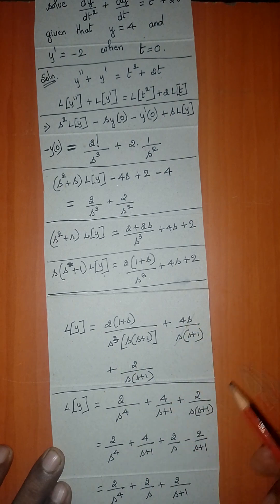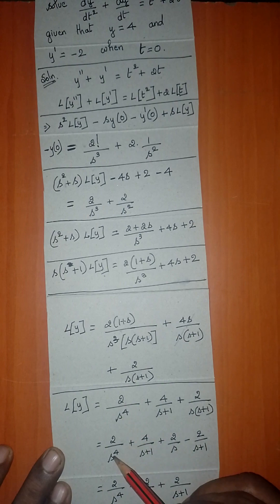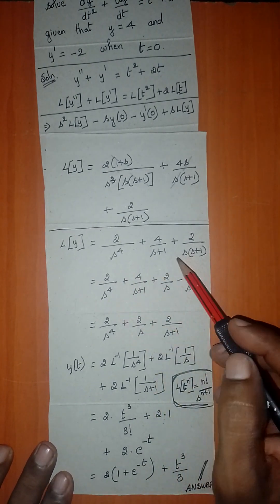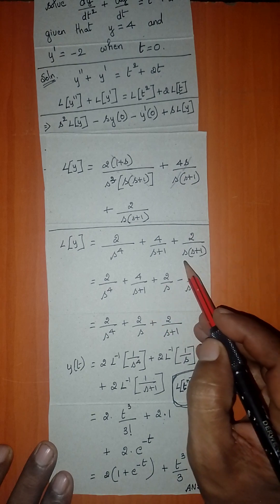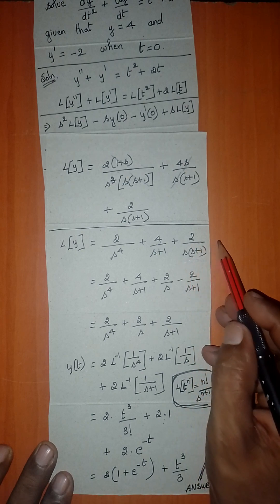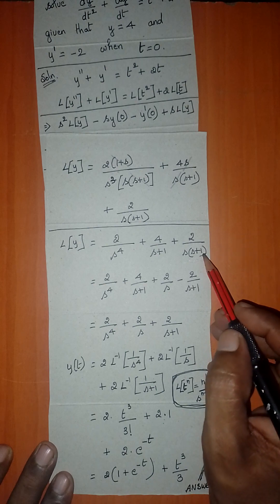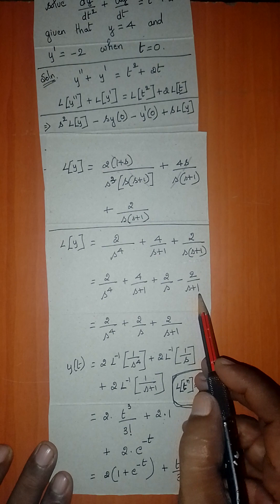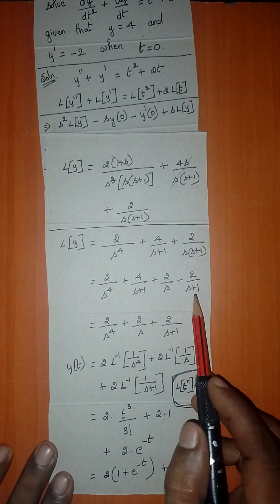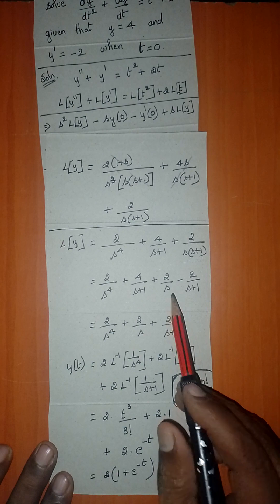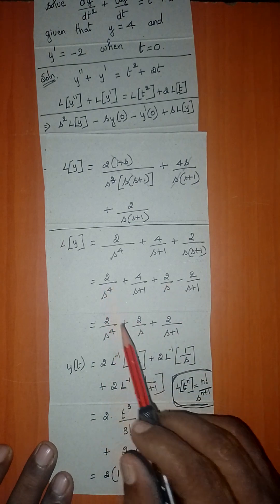Applying partial fractions to 2/[s(s + 1)]: set it equal to A/s + B/(s + 1). Solving gives A = 2, B = −2, so 2/[s(s + 1)] = 2/s − 2/(s + 1). Combining with 4/(s + 1): 4 − 2 = 2, giving 2/(s + 1). So L{y} = 2/s⁴ + 2/s − 2/(s + 1).